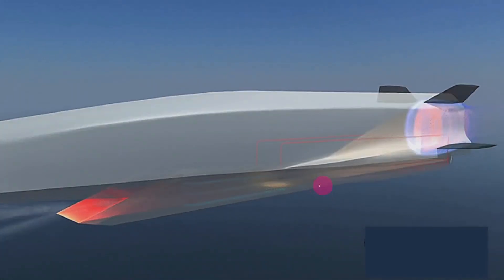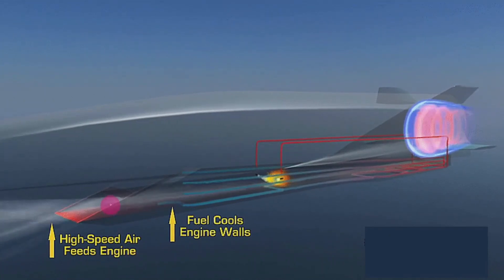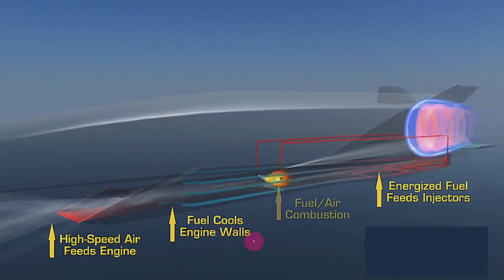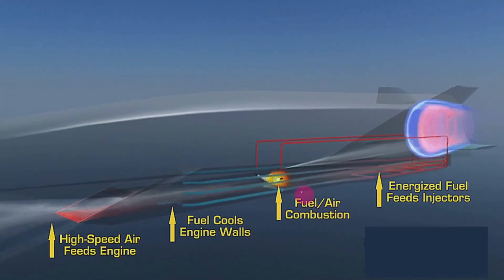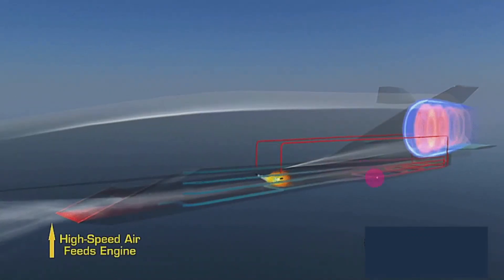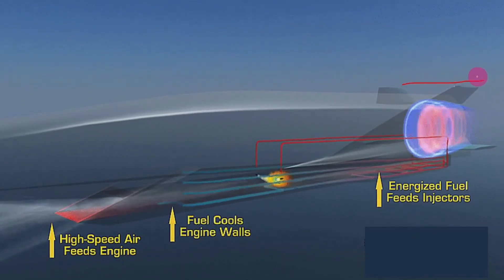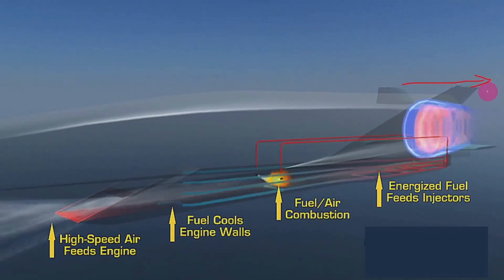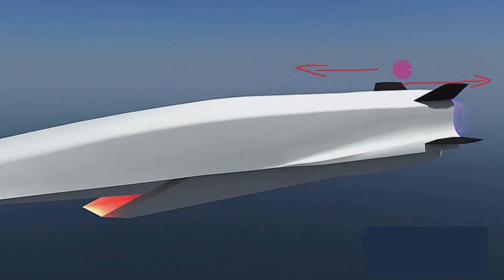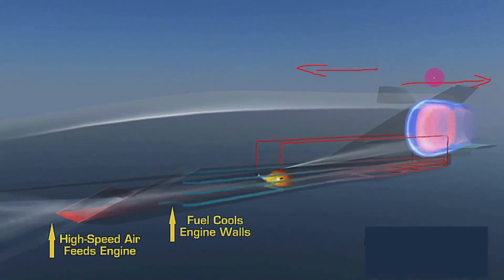As an example of a supersonic missile: high-speed air feeds the engine; fuel-air combustion takes place; and the burnt fuel gases come out of the nozzle in the backward direction, while the missile moves in the forward direction at the same force. That is one example of this system.